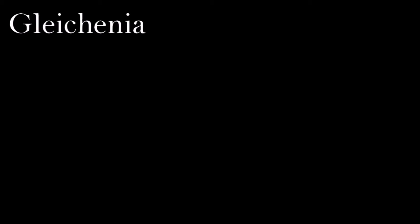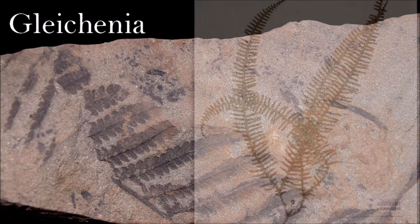This fossil fern is branched, with short, rounded leaflets. It is identical to the tropical Cladophlebis that is found growing today in open places and on the edges of forests.